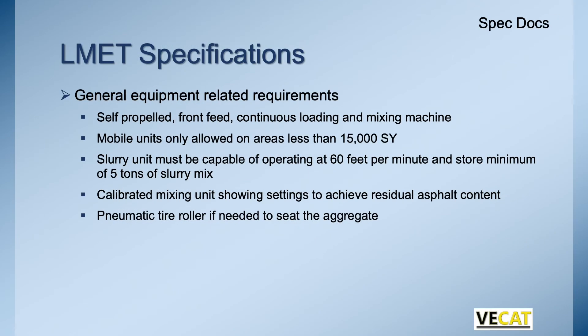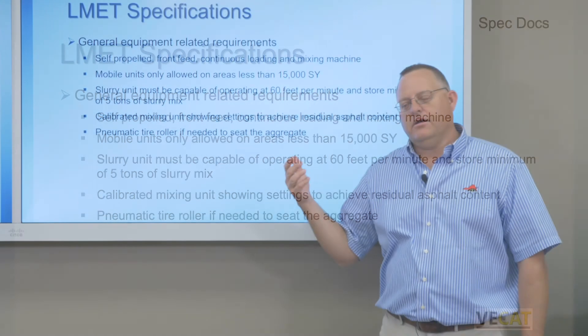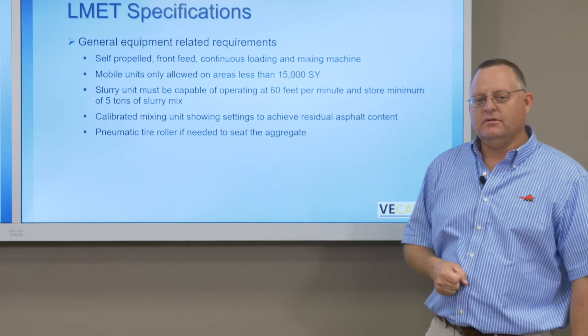General equipment requirements for latex: self-propelled front-end continuous loading and mixing machine, as shown in the video earlier — passing over the paver, the latex machine, and the aggregate in a continuous feed. Mobile unit, unless you're in a small area of 15,000 square yards or less. It's got to move at least 60 feet per minute, with a minimum of five tons capacity. It must be calibrated to achieve the residual asphalt content. The pneumatic tire roller is needed — if needed — to seat the aggregate into the emulsion.